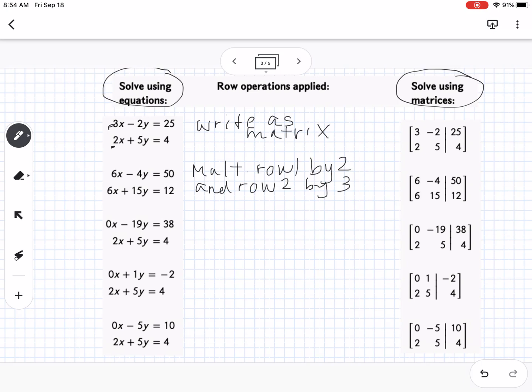The next step is we're going to take row 1 minus row 2, so we're going to subtract, and we're going to take that and replace row 1. If we look here, we have 6x and 6x, so 6 minus 6 gives us 0, negative 4 minus 15 gives us negative 19, 50 minus 12 gives us 38, so that's where this is coming from right here.